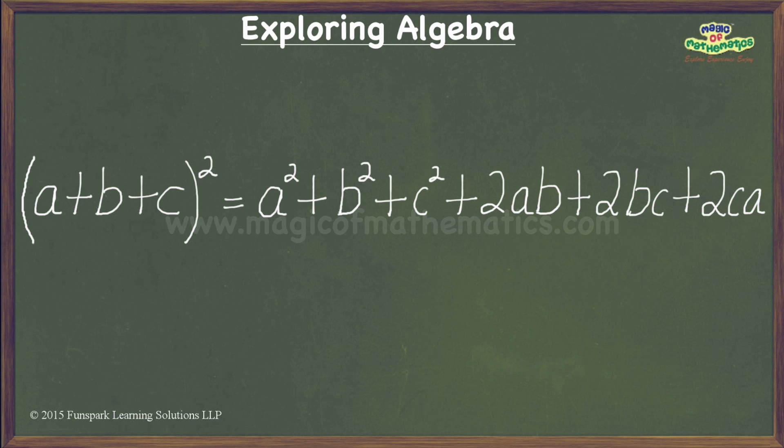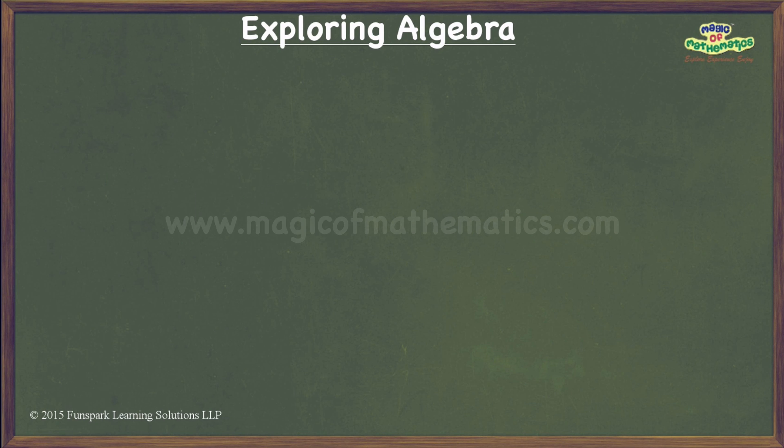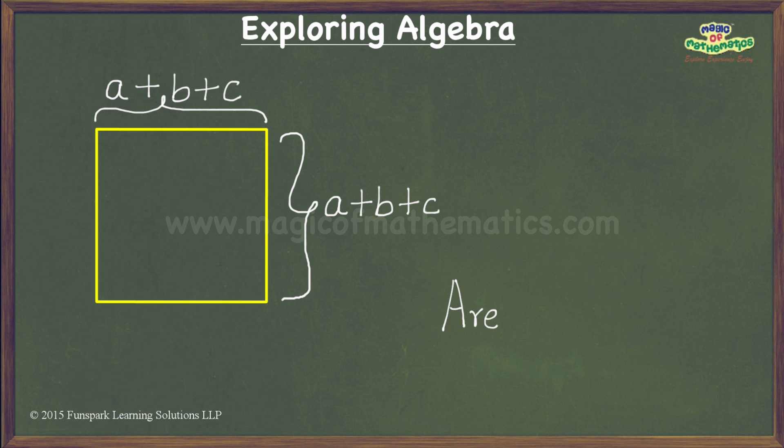Let us now get down to the task at hand. Let us consider a square sheet of paper of dimension a+b+c units, where the units could be any unit of length like centimeter or inch. We know that the area of this sheet is (a+b+c)² square units.